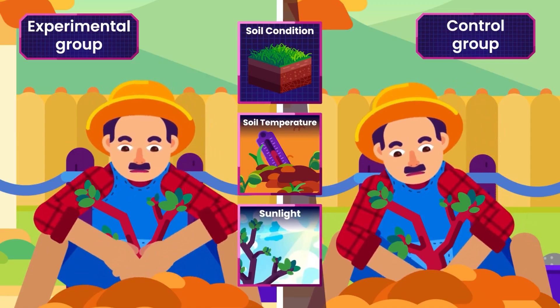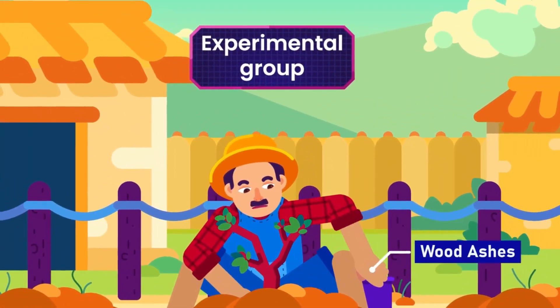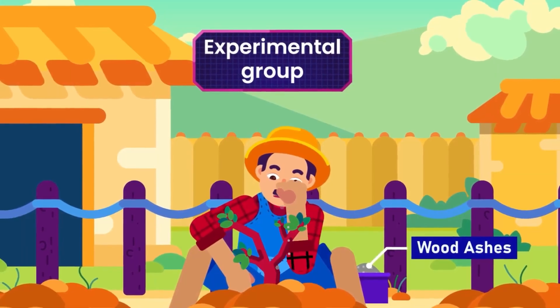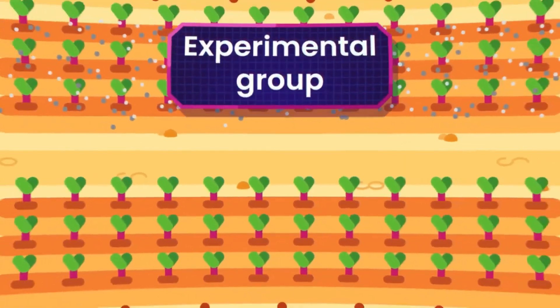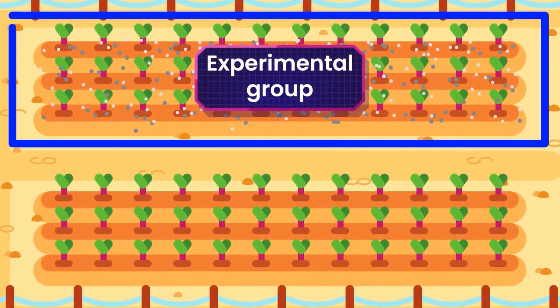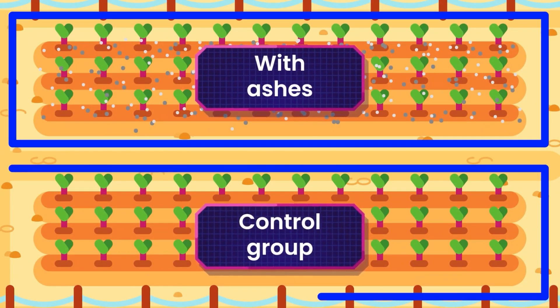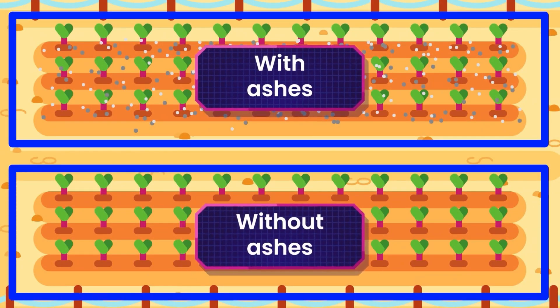except for one factor that you're testing. Let's start by spreading wood ashes as a repellent on top of the garden bed's topsoil. The experimental group then consists of areas covered with the ashes, while the control group is the area without the ashes.